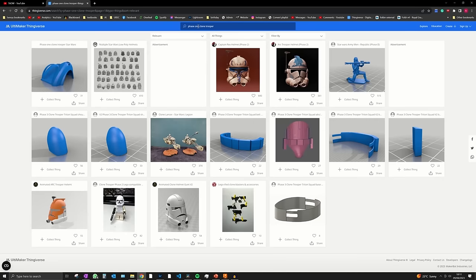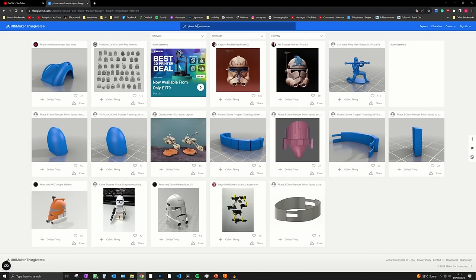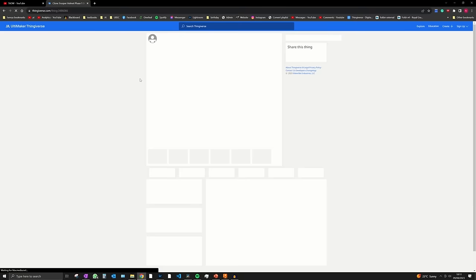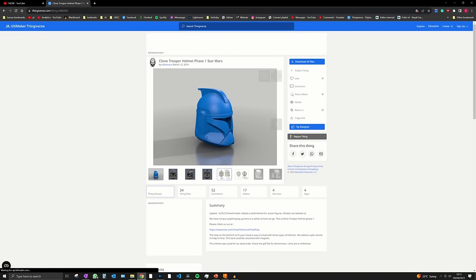I think the phase one clone trooper helmets are by far the coolest clone trooper helmets, so I wanted to make a small key ring version of that. I found this model that looks pretty good and I'll put a link in the description down below to it.